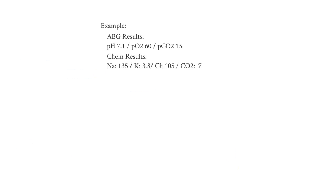Try to work through the following example. Here, we have ABG results with a pH of 7.1, a PO2 of 60, a PCO2 of 15, a chemistry with a sodium of 135, potassium of 3.8, chloride of 105, and CO2 of 7. Pause here and try to identify the acid and base disturbances present. Then in a few seconds we'll go over it together. Remember to go through each step, making sure you're making the correct calculations and identifying each disorder along the way.